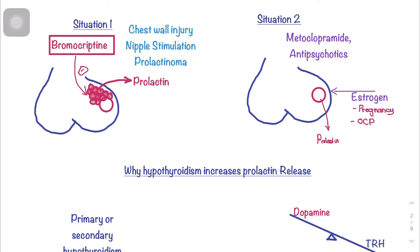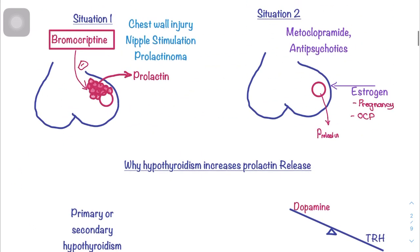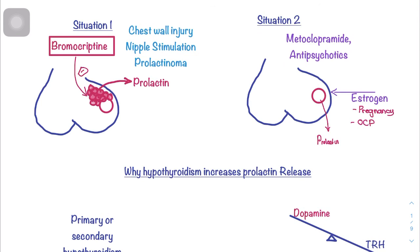Drugs that inhibit dopamine pathways — such as metoclopramide and other antipsychotics — cause a decrease in dopamine release. When dopamine is low, inhibition on prolactin-producing cells is reduced, causing an increase in prolactin release.